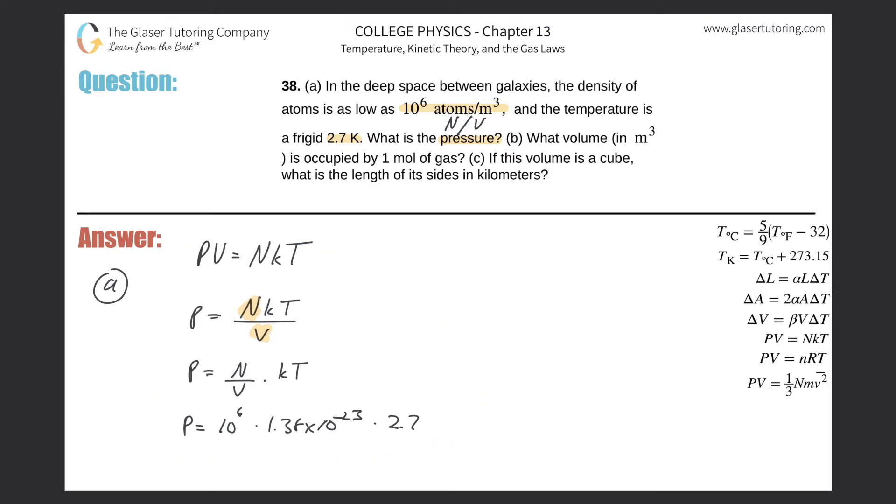So literally, this is all we have to do. So we have then the pressure will be equal to—let's take a look—so 10 raised to the 6th times 1.38 times 10 to the minus 23 times then 2.7. So this comes out to a whopping 3.73 times 10 to the negative 17th, and that's in terms of Pascals. Alright, that would be the pressure—really, really tiny pressure.